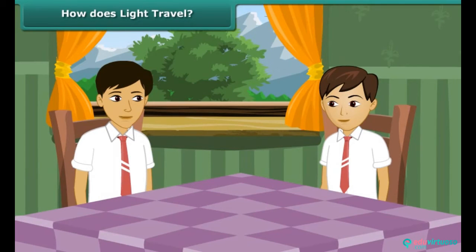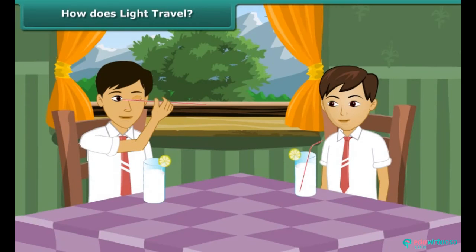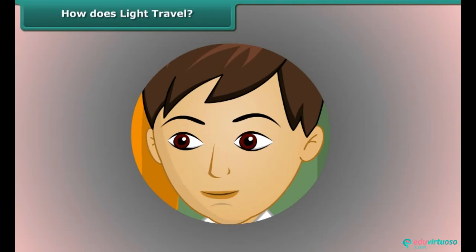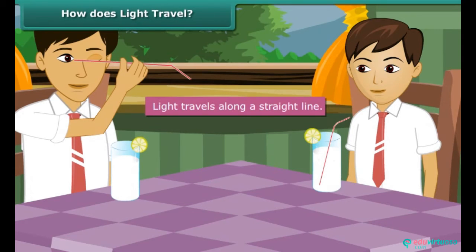You and your brother Ashish have just returned from school. Your mother gives both of you lemonade to drink. Your mischievous brother picks a straw out from the glass and tries to look at you through it. After a while the straw bends. Now when Ashish tries to look at you through it, he is unsuccessful. This activity proves that light travels along a straight line.